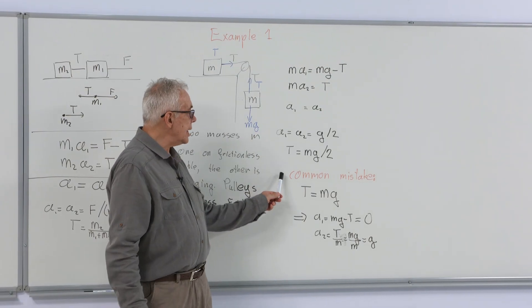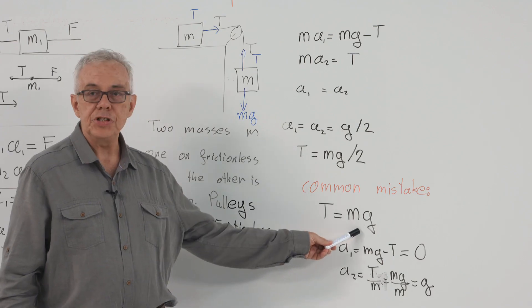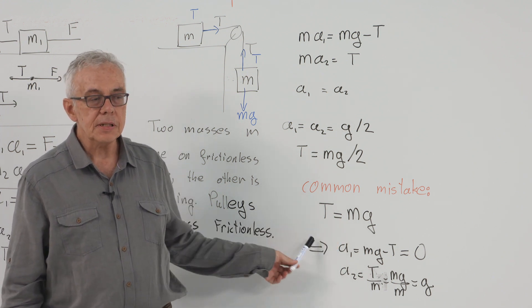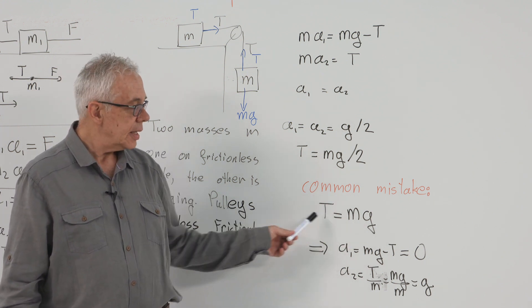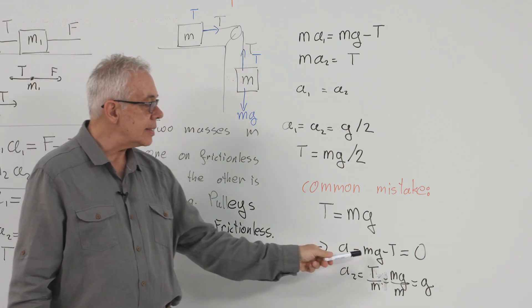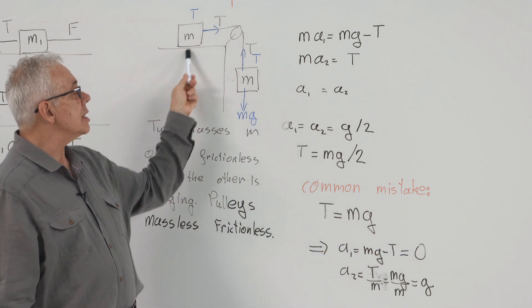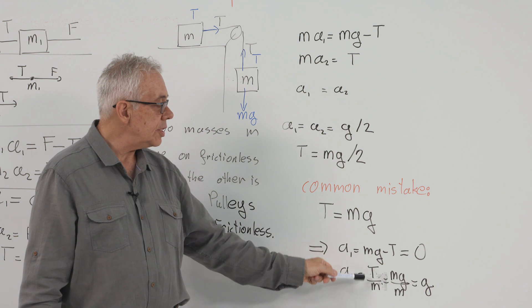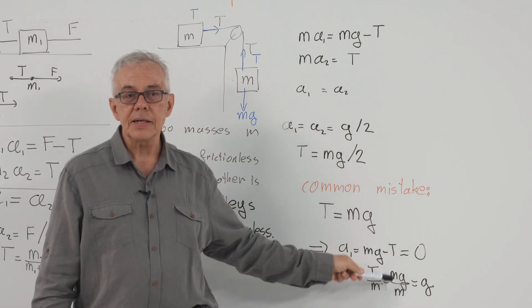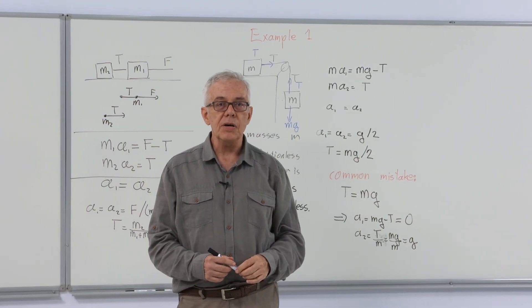A common mistake in this problem that we see is T equals Mg. There is no reason to write this, but it is a very common mistake. If we do this, then acceleration of the hanging mass is Mg minus T, zero. And acceleration of this is T over M, Mg over M is equal to G. The mass accelerations are not equal. This is a very common mistake. Please avoid.